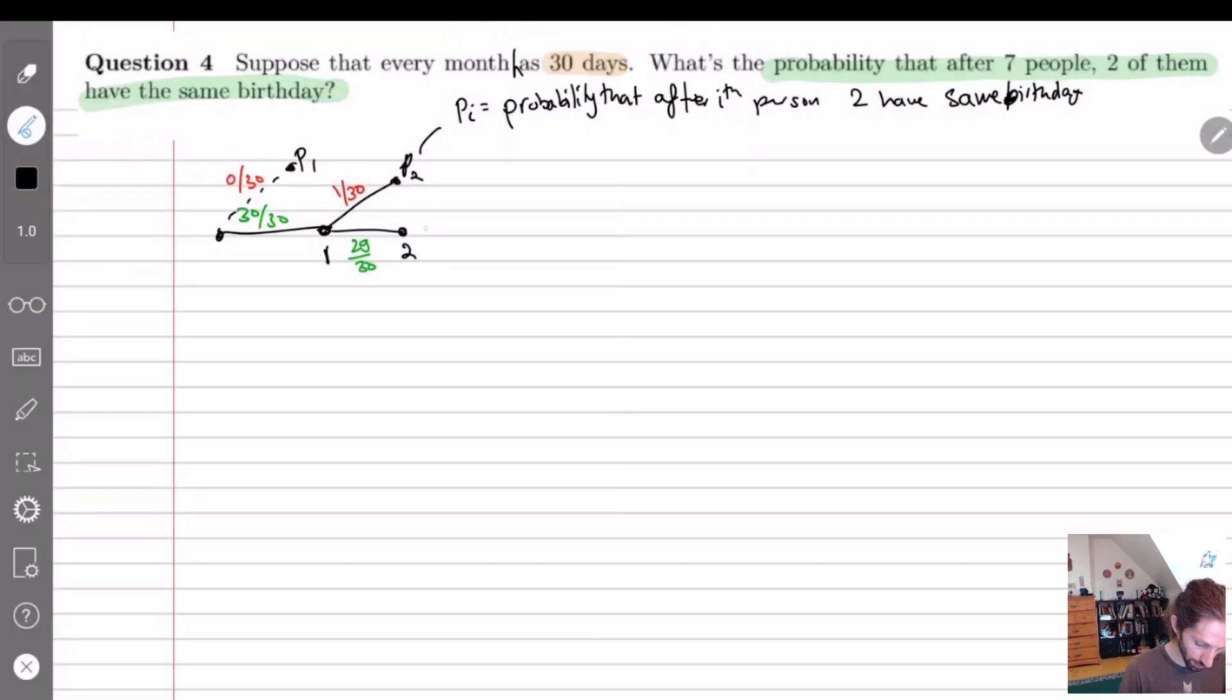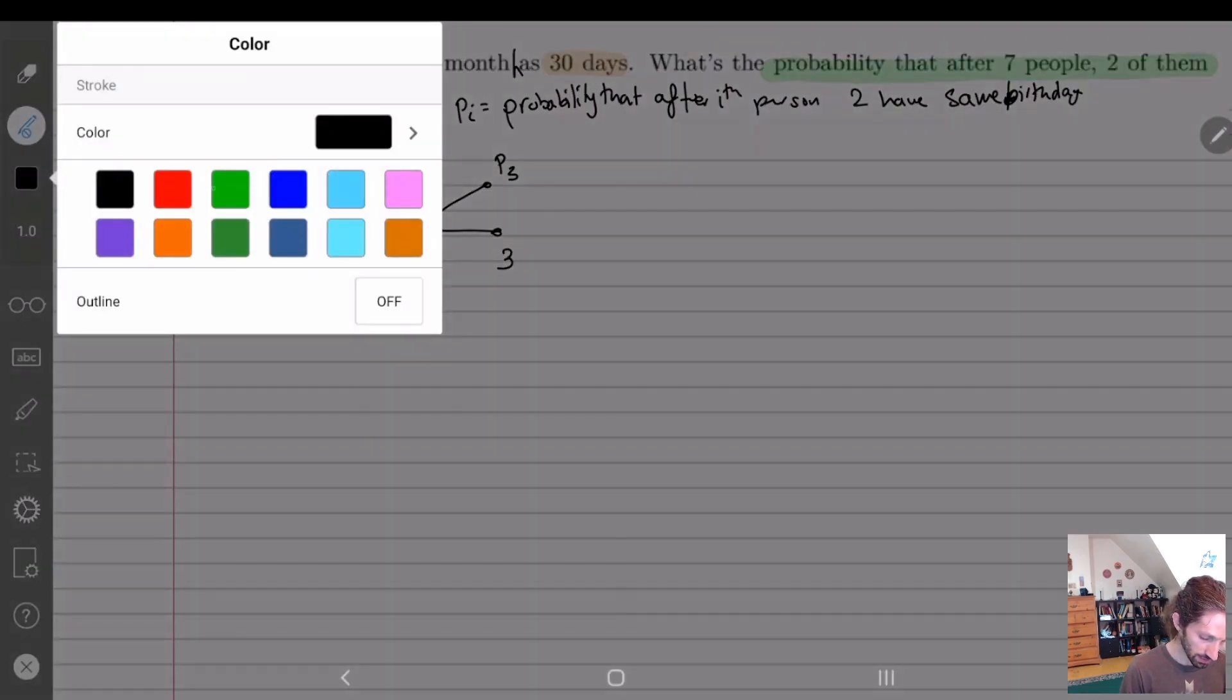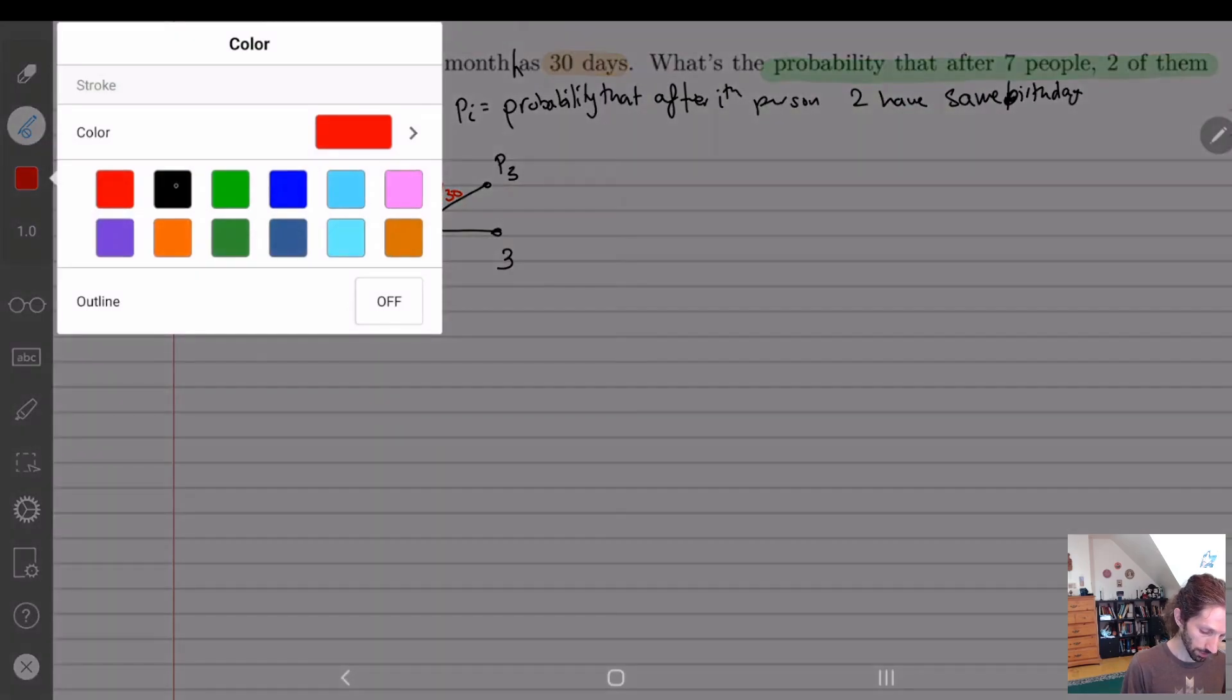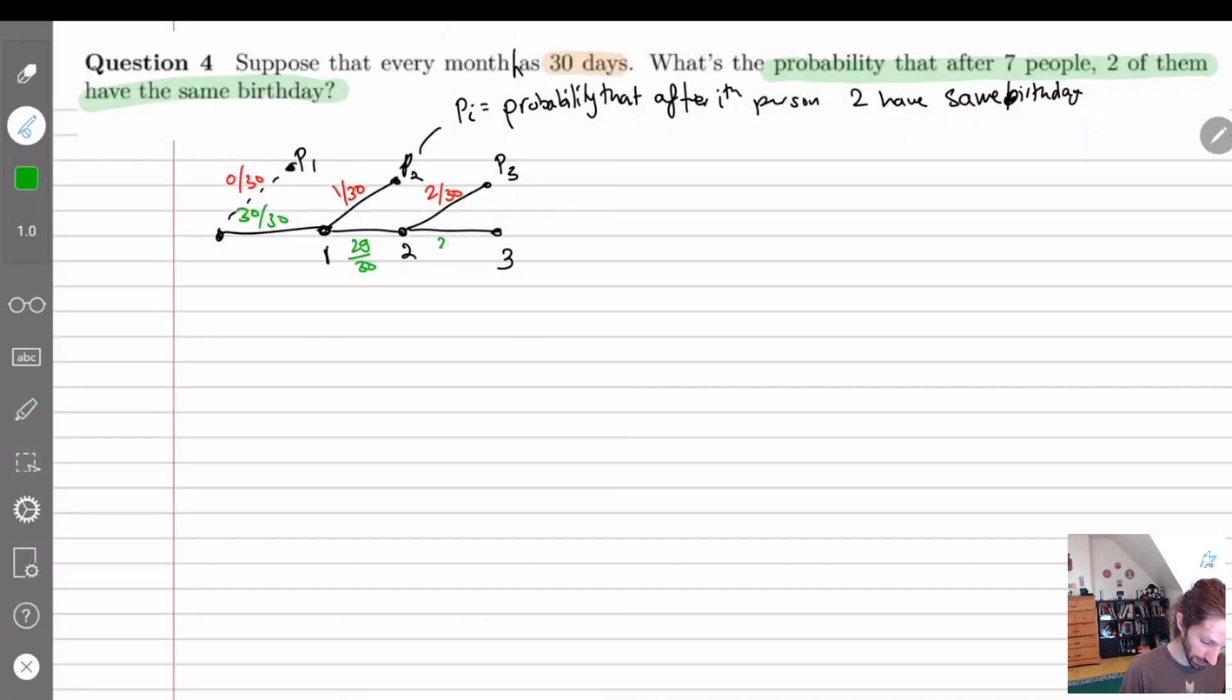All right so from two we have again two options. This top one is going to be P3. And so if we're looking at okay what's the chances that the third person had a birthday from before. Well here we have two out of 30 right because we've seen two people come through. And the second one would be 28 out of 30 right? Every other date is available for them to choose if they're a different person. So at this point it should be easy to kind of see that we just keep doing the same thing.